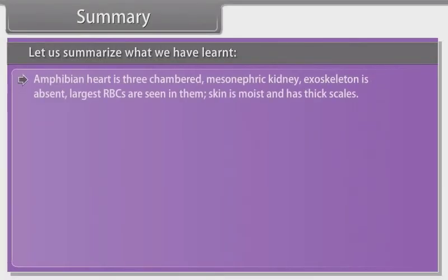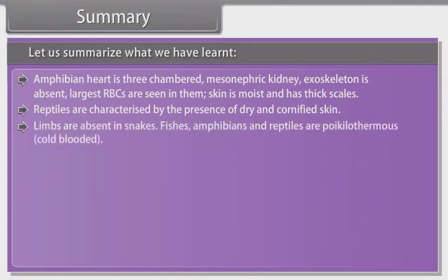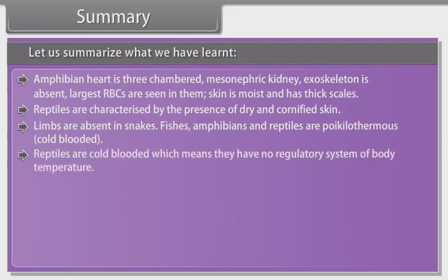Classes Amphibia, Reptilia, Aves and Mammalia have two pairs of limbs and are grouped under Tetrapoda. Amphibians have adapted to live both on land and water. The amphibian heart is three-chambered. Mesonephric kidney; exoskeleton is absent. Largest RBCs are seen in them. Skin is moist. Reptiles are characterized by dry and cornified skin. Limbs are absent in snakes. Fishes, amphibians and reptiles are poikilothermous, i.e., cold-blooded.